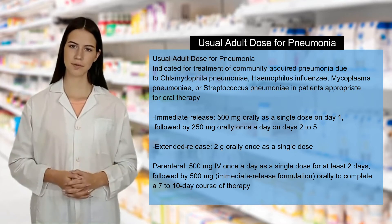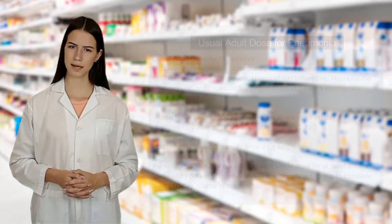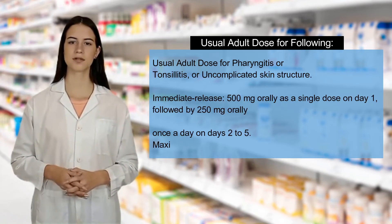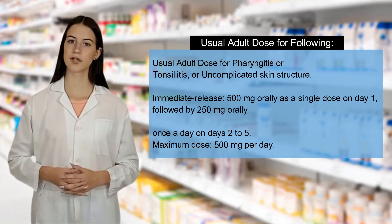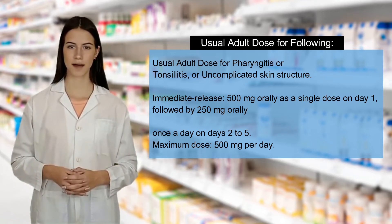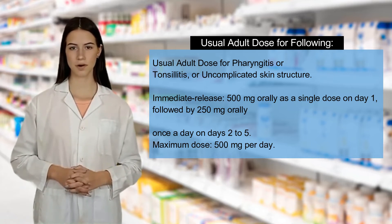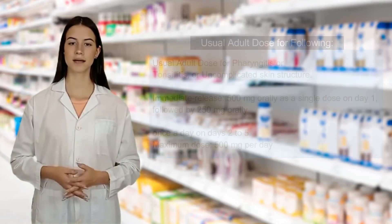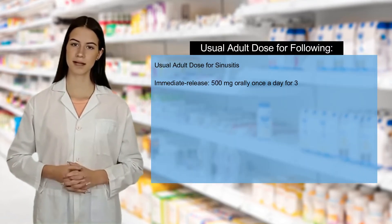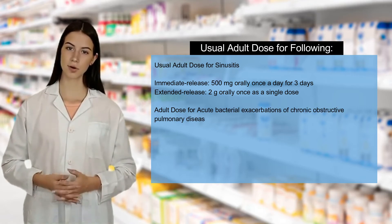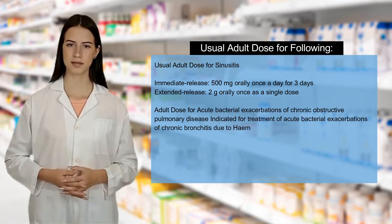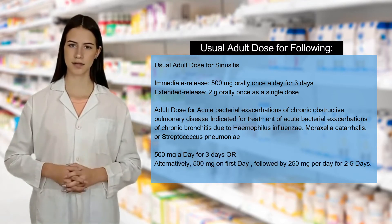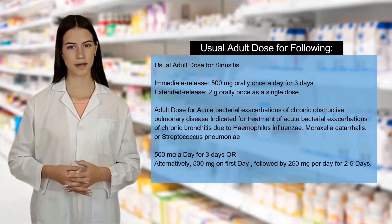Immediate release formulation orally to complete a 7 to 10-day course of therapy. Usual adult dose for pharyngitis, tonsillitis, or uncomplicated skin structure: Immediate release, 500 mg orally as a single dose on day 1, followed by 250 mg orally once a day on days 2 to 5. Maximum dose: 500 mg per day. Usual adult dose for sinusitis: Immediate release, 500 mg orally once a day for 3 days. Extended release: 2g orally once as a single dose.